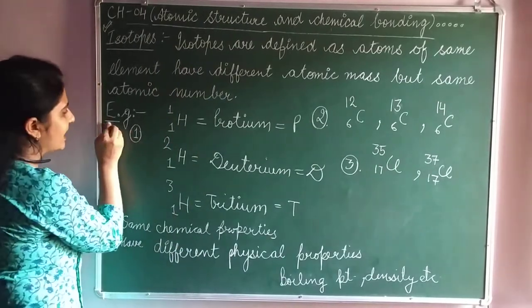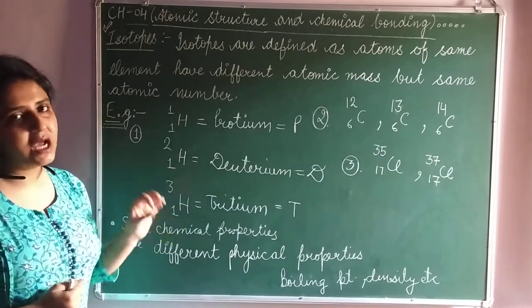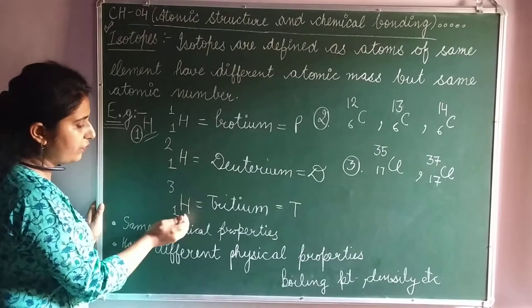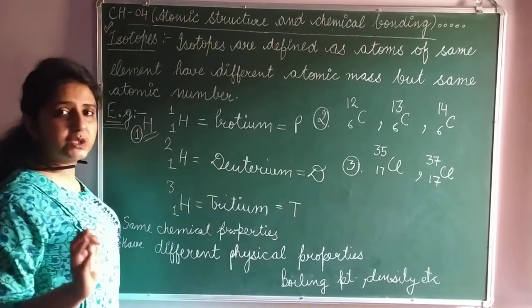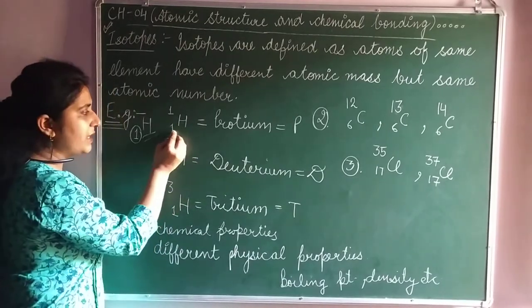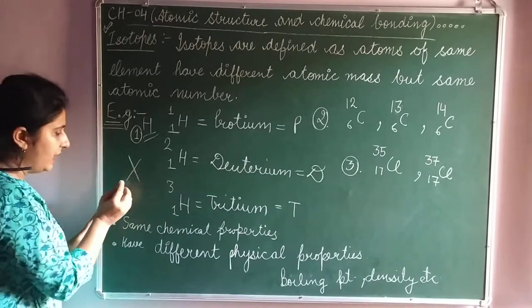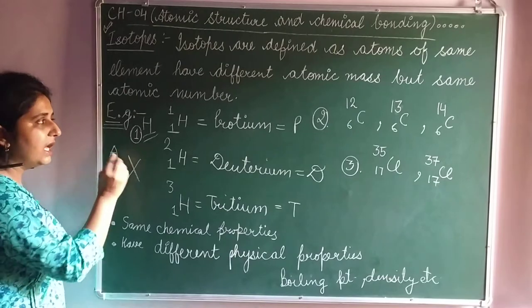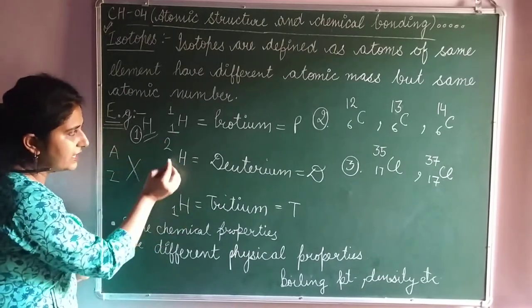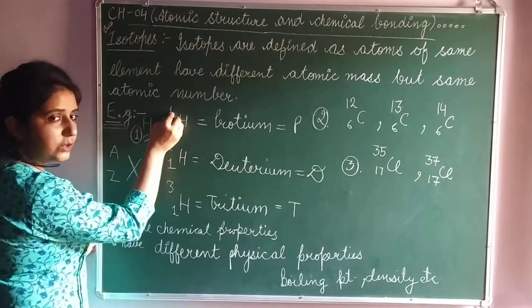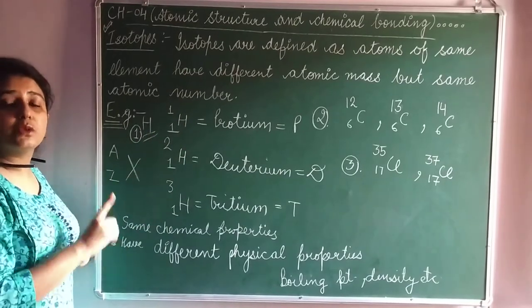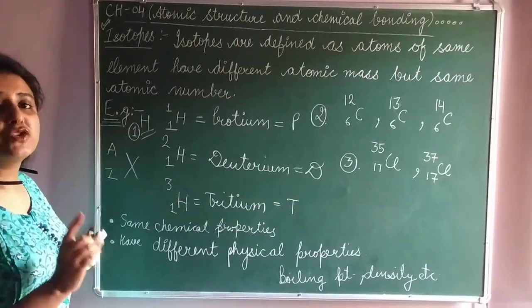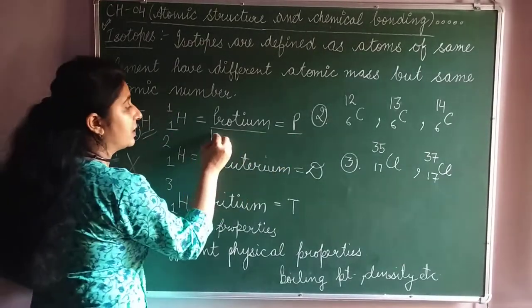Let's take an example that will clearly explain what is meant by an isotope. If we take hydrogen as an element, hydrogen contains three types of atoms — we can say it contains three isotopes. The first one is hydrogen with atomic number 1. Atomic number is written at the base represented by symbol Z, and atomic mass on the upper side with symbol A. So the three isotopes of hydrogen have atomic number 1, 1, and 1, and atomic masses 1, 2, and 3. When the atomic mass of the hydrogen element is 1, it is called protium.